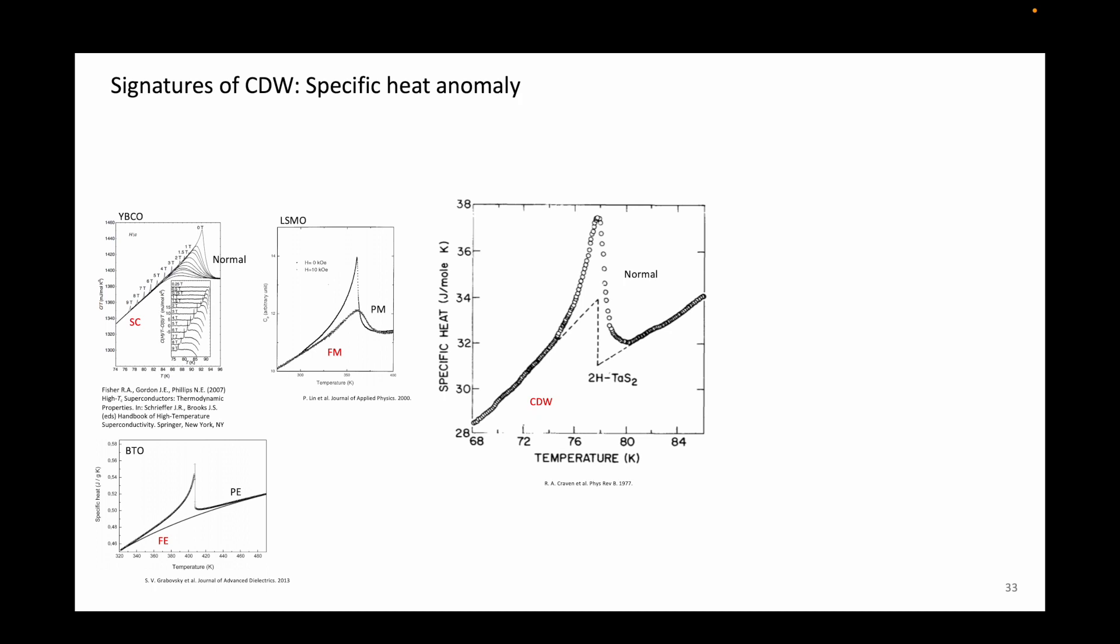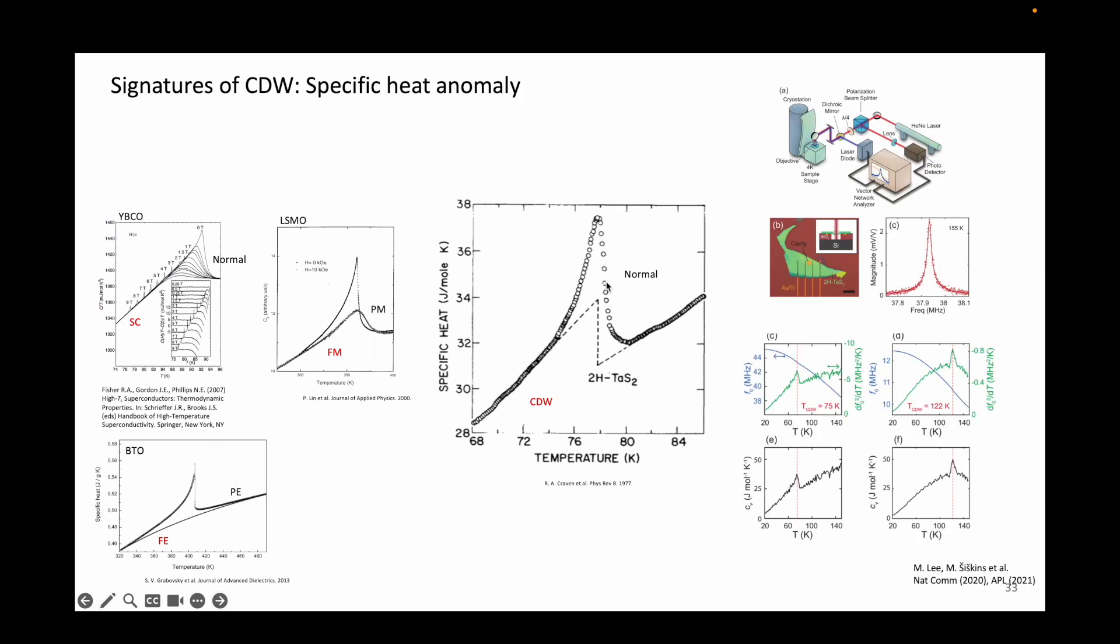The anomaly in the specific heat can be seen for superconductivity, magnetism, ferroelectricity, and of course in charge density wave transitions. A shameless plug here, but these are some of our works on measuring the anomaly in the specific heat and the thermal expansion coefficient due to the phase transitions in tantalum disulfide and tantalum diselenide.